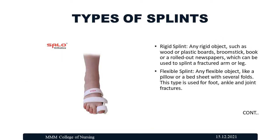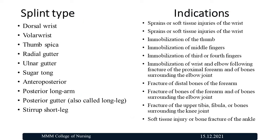A rigid splint can be any rigid object such as wood, a plastic board, broomstick, book, or rolled newspaper, which can be used to splint a fractured arm or leg. A flexible splint is any flexible object like a pillow or a bed sheet folded several times; this type is used for foot, ankle, and joint fractures.